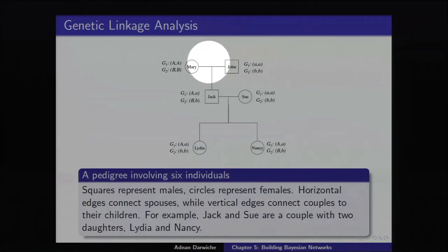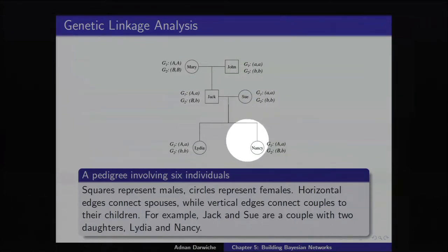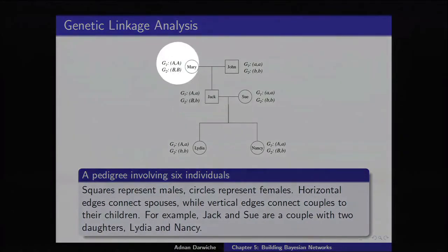Jack is the offspring of Mary and John. Jack and Sue are a couple, and they have Lydia and Nancy. It's simple — you have a pedigree like this. For each individual, in this case we're talking about two particular genes, G1 and G2.